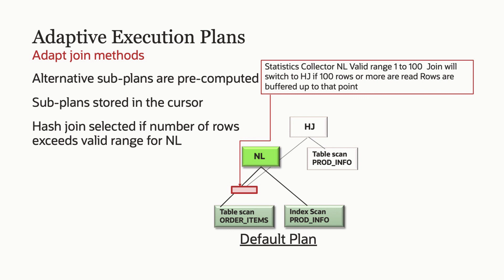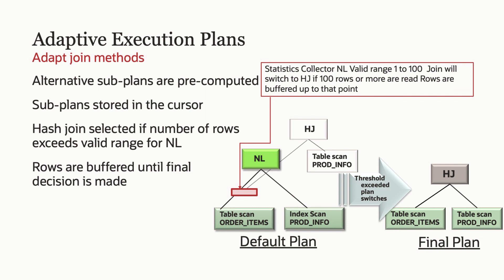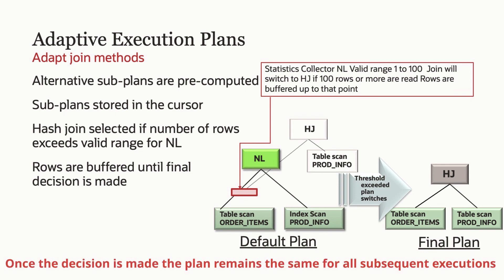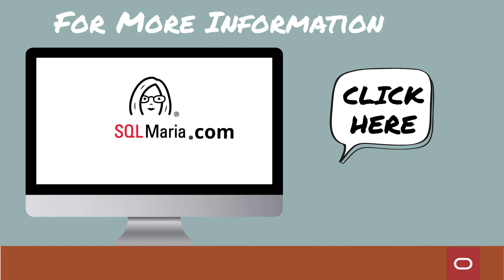If the number of rows produced by the left-hand side is less than a threshold, we go with the default plan — in this case nested loops. But if the number of rows goes over that threshold, we instantly flip to the hash join. Once the decision is made, the stats collector becomes a no-op and all subsequent executions use the final chosen plan. The threshold is not a hard-coded value — it is very dependent on your particular queries. And this can work in both directions: I can start with a hash join and flip to nested loops, or go from nested loops to hash join. For more information, please go to SQLMaria.com or the Optimizer blog.